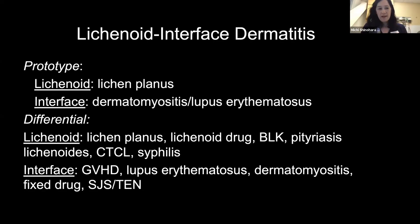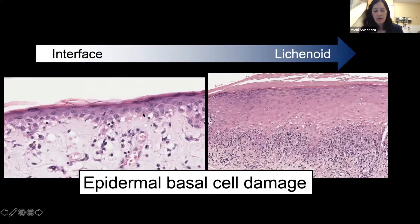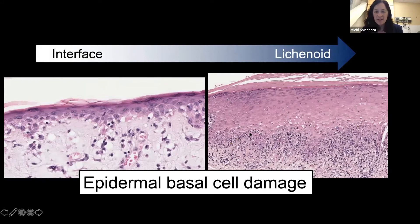Lichenoid interface dermatitis. These are on a spectrum — the prototype for lichenoid is lichen planus; interface dermatitis is usually much less dense, with the prototype being more like dermatomyositis. Interface is characterized by vacuolar interface change — referring to bubble-like changes — while lichenoid has a more band-like lymphocytic infiltrate. What they both have in common is epidermal basal cell damage — also called liquefaction degeneration — and dead reds, the necrotic keratinocytes along the basal membrane.